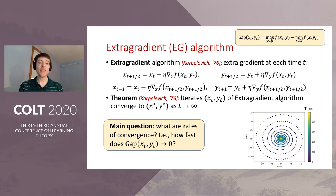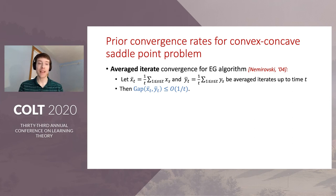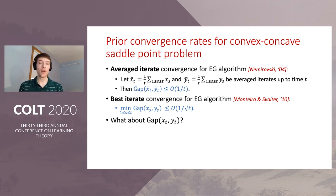The main question we address in this paper is what are the rates of convergence of the extra gradient algorithm — in particular, how fast does the primal-dual gap at x_t, y_t converge to zero? Nemirovsky in 2004 showed an explicit rate for the average iterates: if x-bar_t and y-bar_t denote the averages of the first t iterates, then the primal-dual gap is bounded above by O(1/t). It is also known that the best iterate convergence gives a bound of O(1/√t). However, neither of these addresses the primal-dual gap for the last iterates x_t, y_t themselves, and that is the question we address.